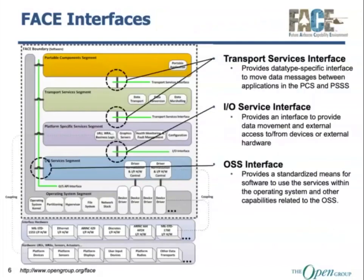Each of the segments is separated by a defined FACE interface, and all FACE interfaces are defined within the technical standard and provided in IDL format. The first interface — between the portable components segment, the platform-specific services segment, and the transport services segment — is the transport services interface. This is a typed, data type-specific interface that allows PCS and PSS components to send messages among each other, either blocking, non-blocking, or pub-sub, depending on the capabilities provided by components within the TSS.